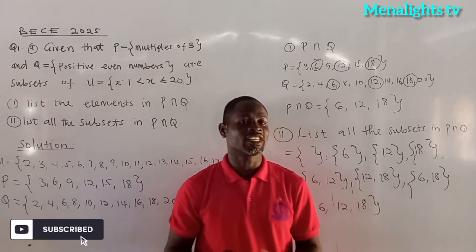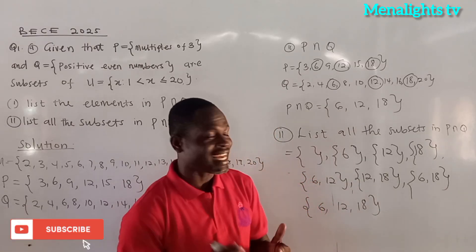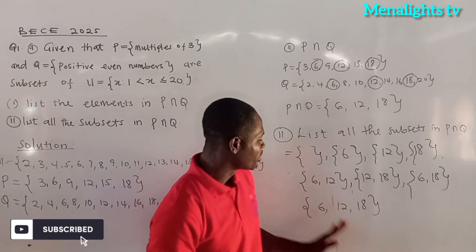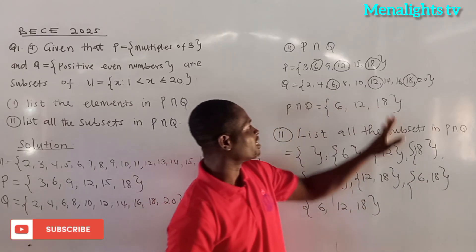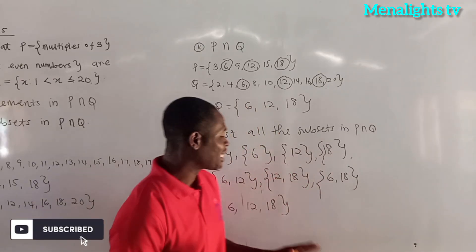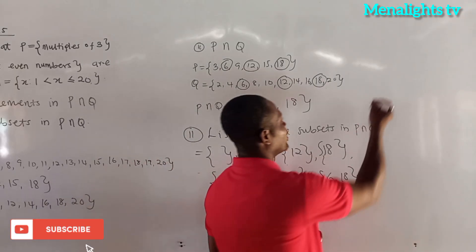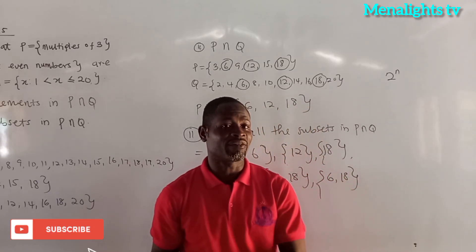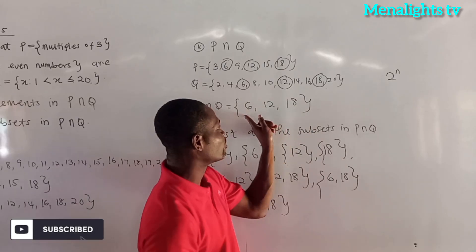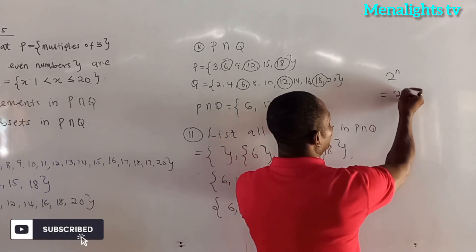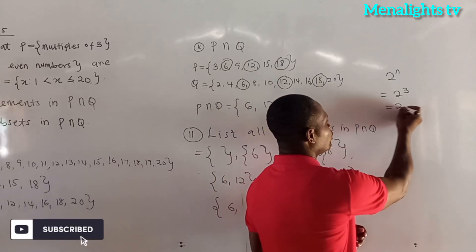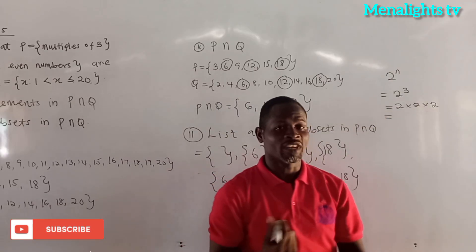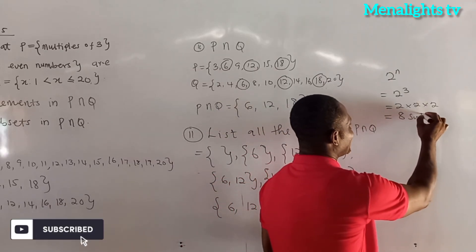A set is also a subset of itself. When we look at this, we are supposed to get 8 subsets: 1, 2, 3, 4, 5, 6, 7, 8. These are the subsets of P intersection Q. To know the number of subsets from a given set, we use the formula 2 exponent n, where n is the number of elements. Here we have 3 elements, so 2^3 = 2 × 2 × 2 = 8. So we must get 8 subsets.